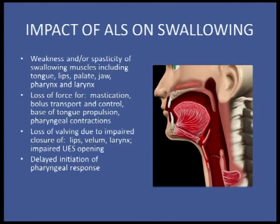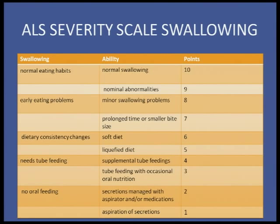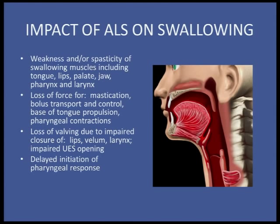The impact of ALS on swallowing: patients with tongue weakness have difficulty controlling what's in the mouth. You can have loss of force for mastication, bolus transport and manipulation, loss of valving, and delayed initiation of the swallow response. In an abnormal swallow, you can see solid food stuck in the throat and aspiration of liquid during the swallow — stasis getting stuck and material entering the airway.